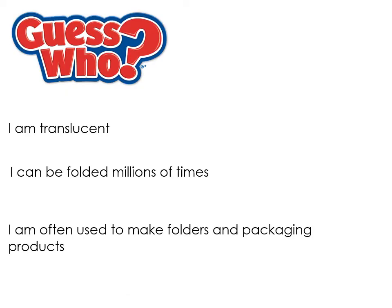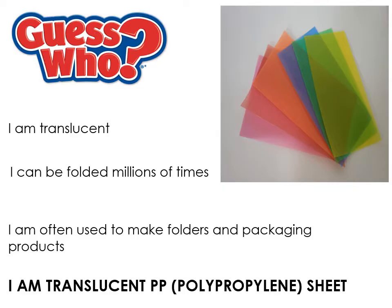Translucent polypropylene sheet can be folded millions of times — it has excellent fatigue resistance — and is often used to make folders and packaging products. We actually have this at school and we make things like little hinges from it. It's the same material on the front cover of school planners, and DVD and game cases are also made from polypropylene because it can be folded loads of times without breaking.